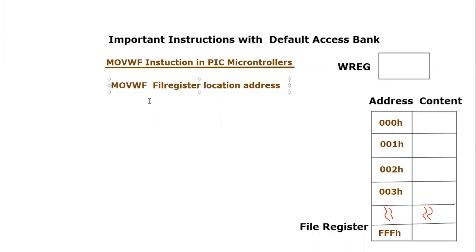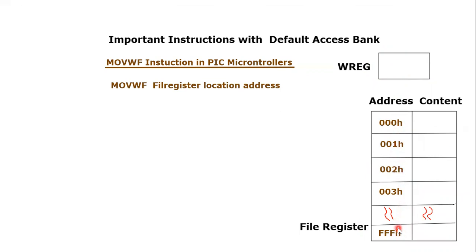Let's see what is the purpose of this instruction. The purpose is to move the content of the working register into the file register. As you can see here, this is the working register — right now it is empty, but if it has a certain value, we can move that value into the file register.